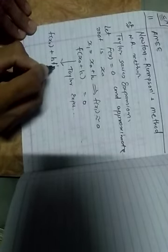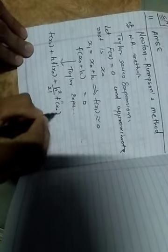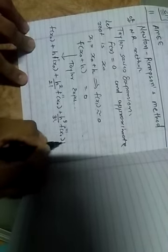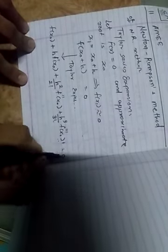Here we have the Taylor expansion. This difference is f(x₀) + h divided by 1 factorial times the first derivative f'(x₀), then h² divided by 2 factorial times the second derivative f''(x₀), h³ divided by 3 factorial times the triple derivative f'''(x₀), and so on. That equals zero.